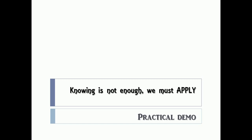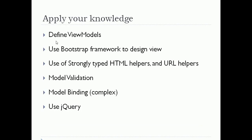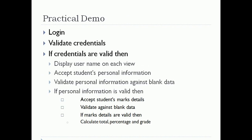Let us see what we are going to apply here. We are going to define view models — specifically called view models because our models represent the data that our view is going to use. To design our view we are going to use the Bootstrap framework, strongly-typed HTML helpers, and URL helpers to generate HTML tags. Then we will perform model validation using data annotation or validation attribute technique, then model binding to convert HTTP request values into our objects. My focus is to cover complex model binding, and then we'll see a small application of jQuery.